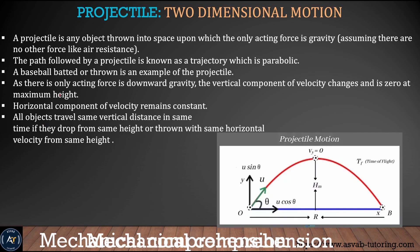The next thing we'll learn is projectile motion — two-dimensional motion. Say you are kicking a ball from the ground and it hits the ground at a certain period of time. There are mainly three things you need to know: what is the velocity at the starting point, where is the velocity at the maximum point, and what is the velocity at the hitting point. The maximum velocity is when you kick the ball. The velocity will be zero at the maximum point and also when it hits the ground.